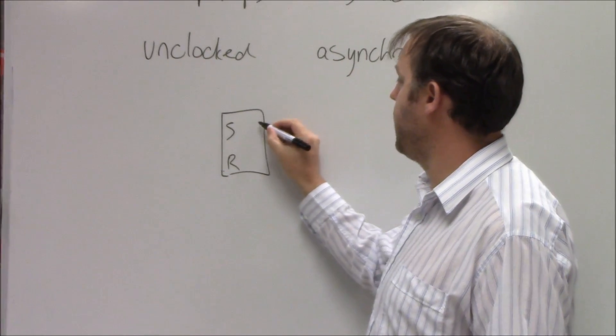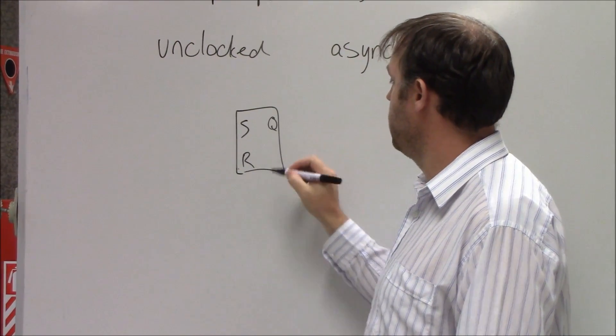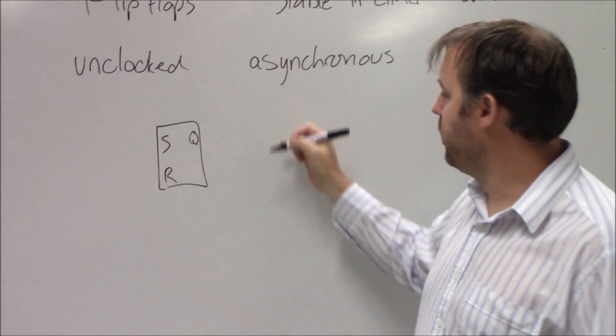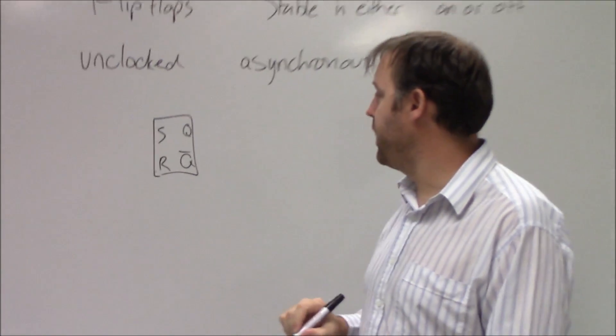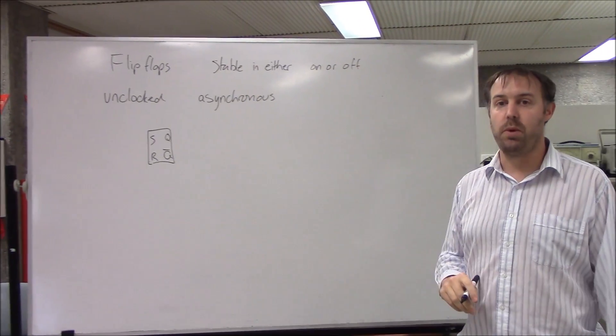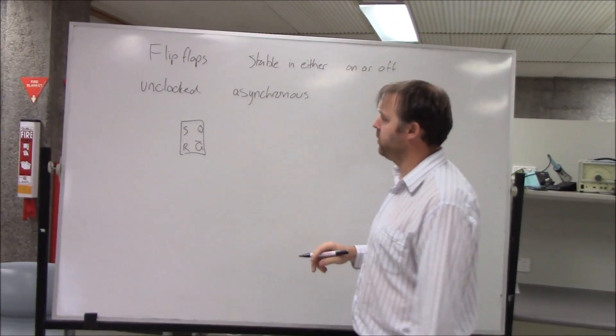All flip-flops have two outputs. They've all got a Q, which is the output, but they've also got the complementary of that, complementary output which is known as Q-bar, or not Q if you like.